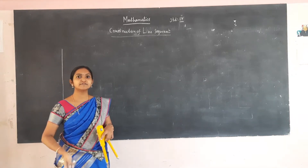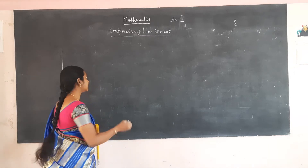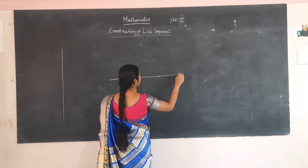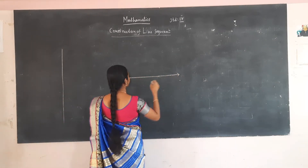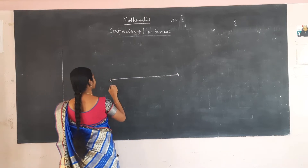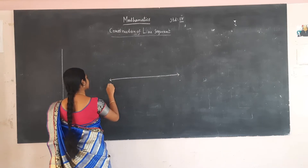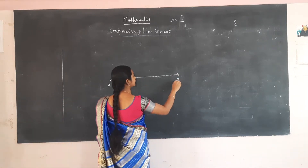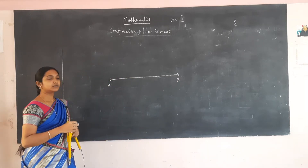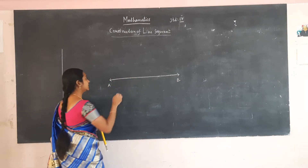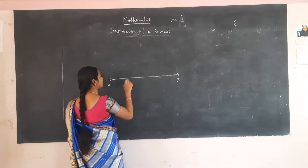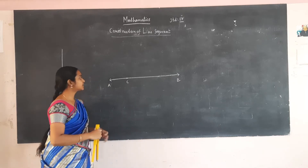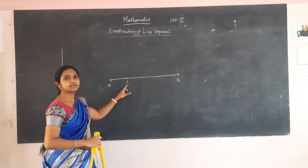For construction of a line segment, first draw a line. Let the line be AB. Now keep a point upon the line. Let this point be C.